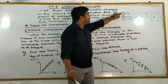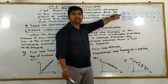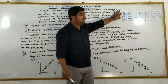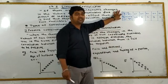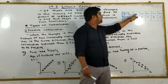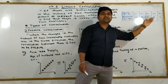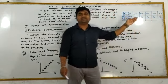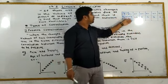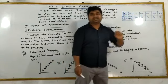Yaan likhau hai price and demand. Price ko x, demand ko y. X and y there are two variables. Price: 10, 20, 30, 14, 50 — price decrease ho raha hai. Demand: 12, 6, 4, 3, 2 — demand bhi decrease ho raha hai.